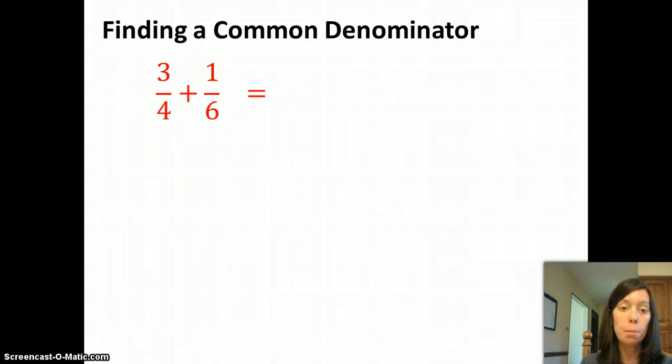So that's called the least common multiple. We're looking for the smallest number, the least, that both of these go into.